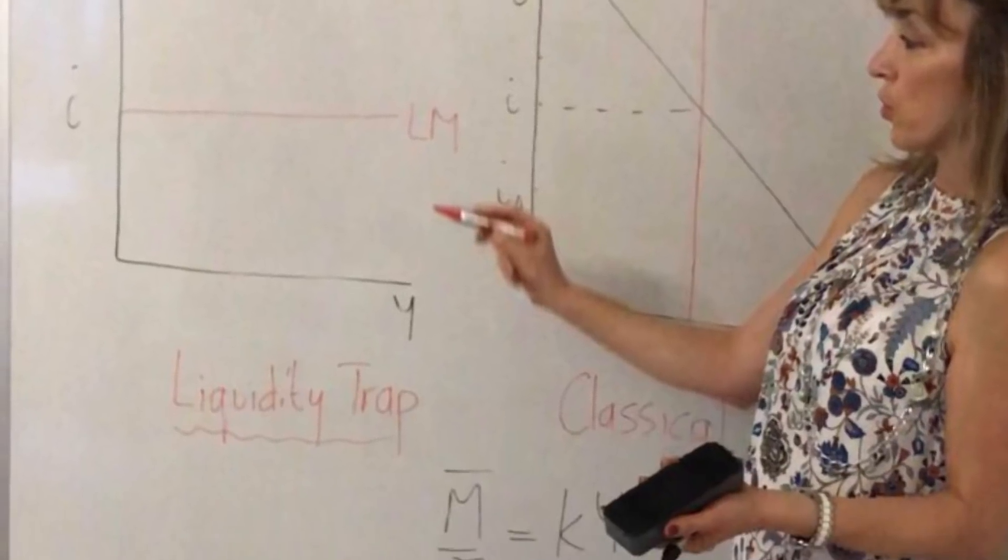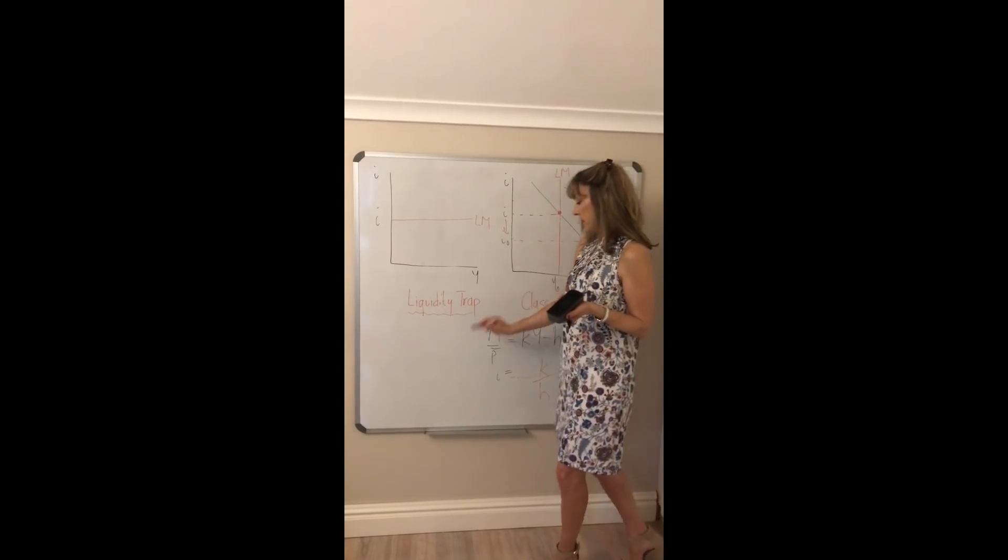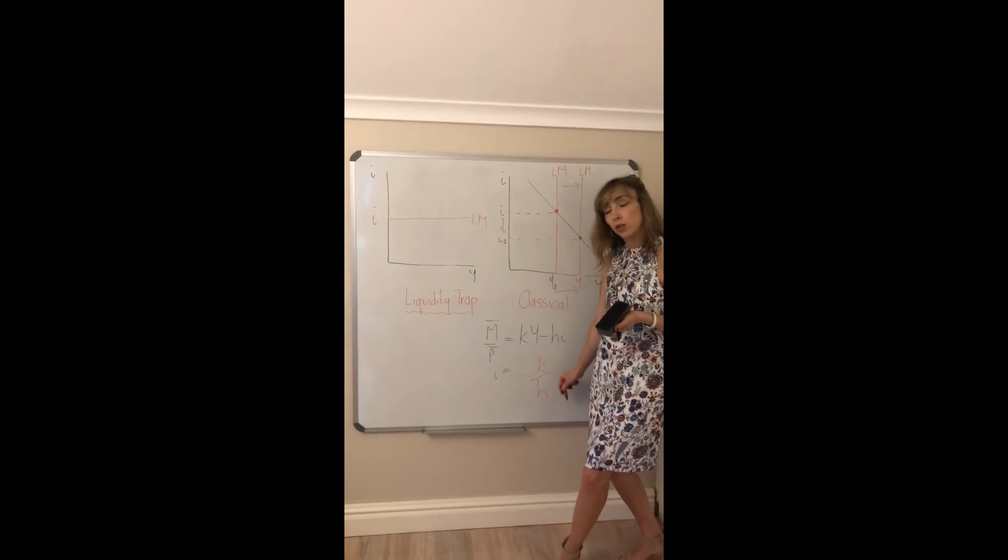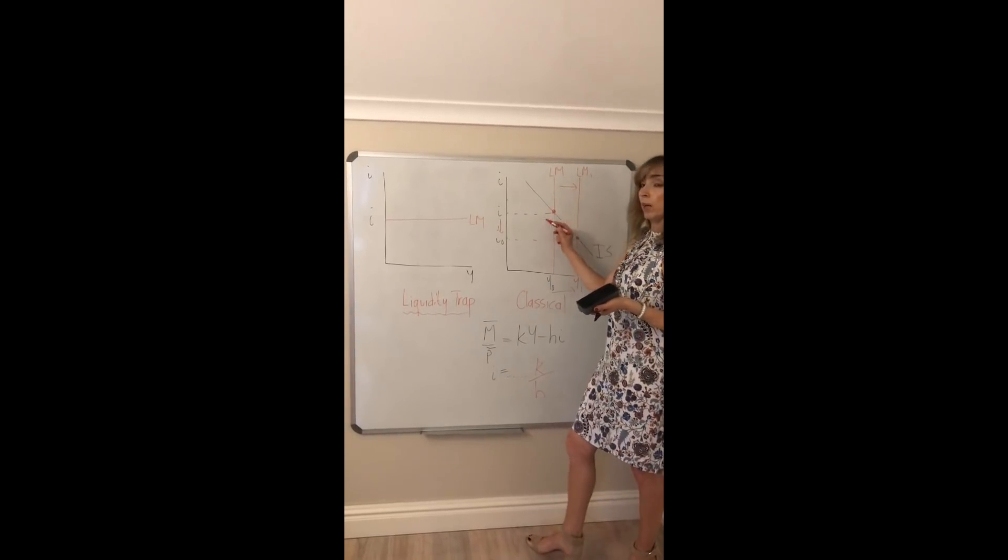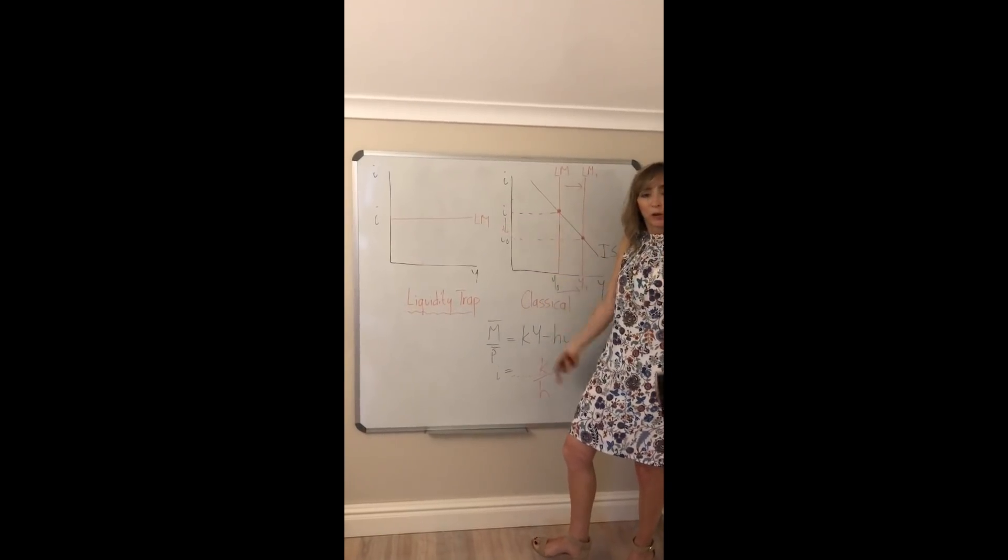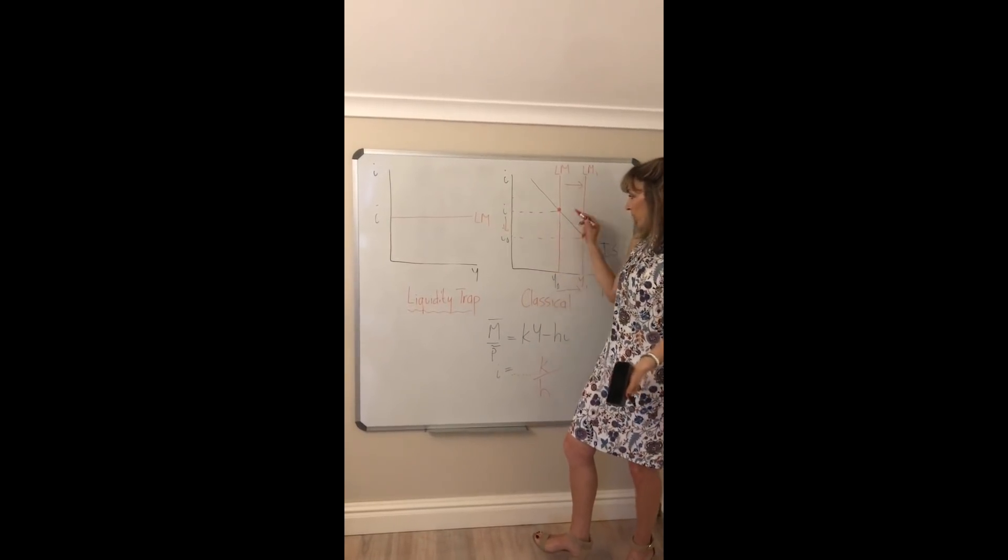So let's recap. So the steeper the LM curve, the higher is K, the lower is H. So in this extreme, where LM is vertical, it's extremely steep, H is going to be incredibly low. In fact, it's going to be zero in that instance.